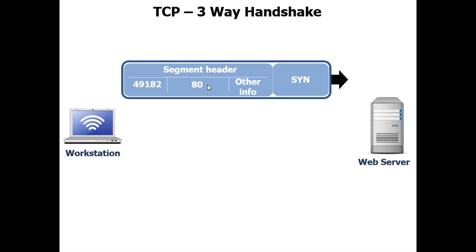HTTP operates on port 80. We put a source port of the ephemeral port number. An ephemeral port number, or dynamic port number, is a randomly chosen port number within a certain range. It's generated essentially by your workstation and the web browser you're using in combination. Every single request that your web browser makes to a website will get its own unique identifier, meaning that for every single web browser session you have open, you have one or more ephemeral port numbers assigned to that particular web browser.